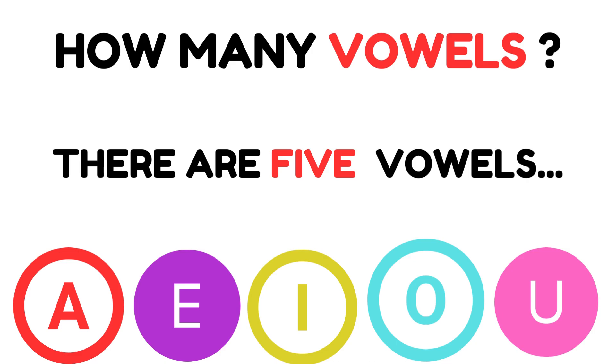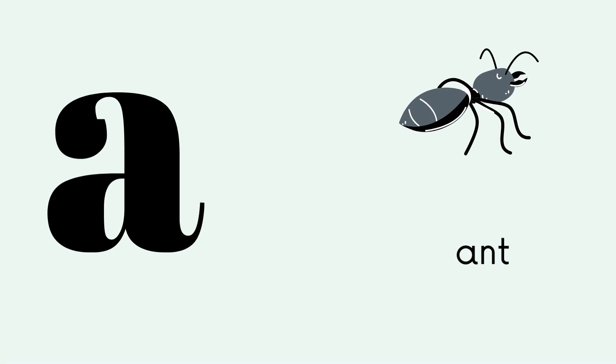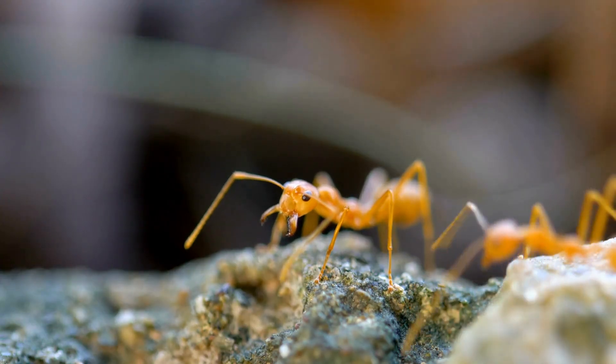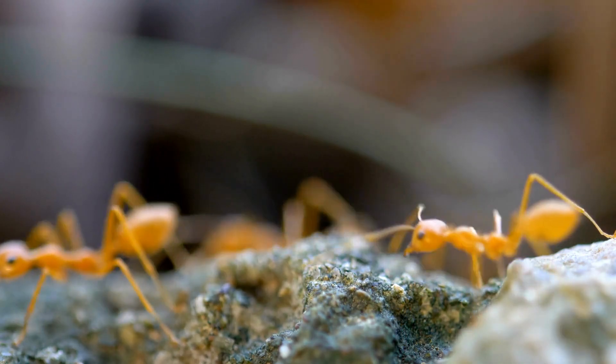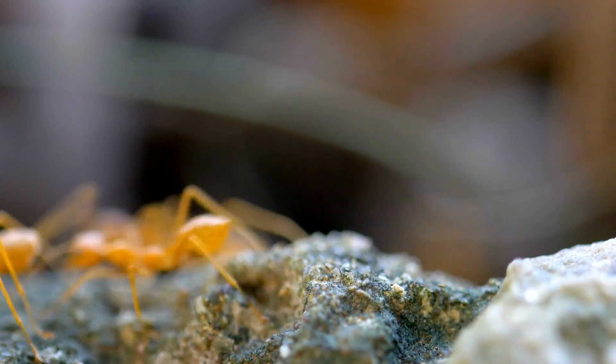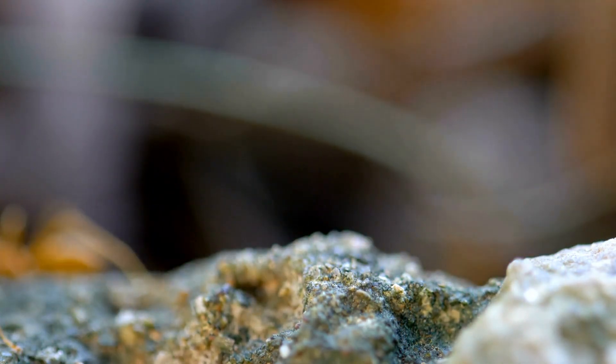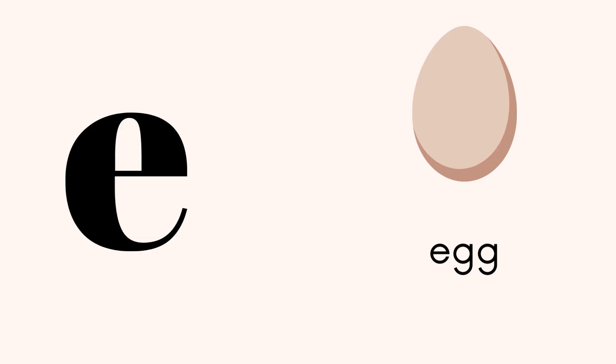Okay, बच्चो तो number one — A. A हमारा vowel है। A for ant. Ant means चींटी। A हमारा vowel है। A के बाद आता है E।